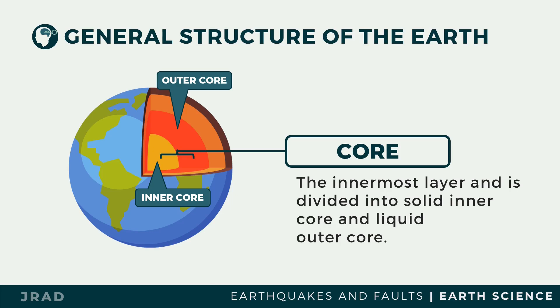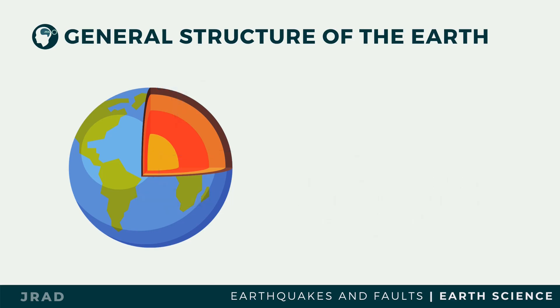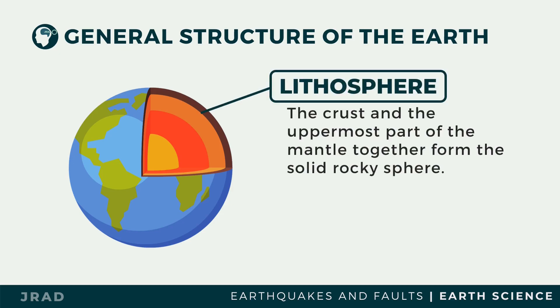The crust and the uppermost part of the mantle together form a solid rocky sphere called the lithosphere. Scientists believe that the lithosphere is broken into segments called lithospheric plates, and these plates are moved by the hot plastic mantle beneath the lithosphere.